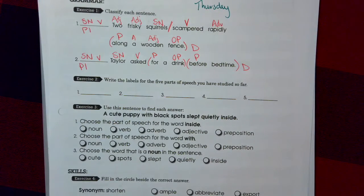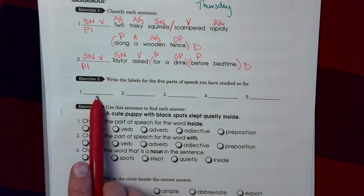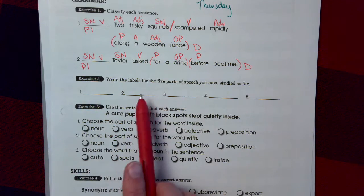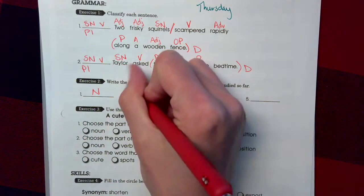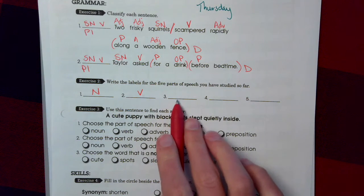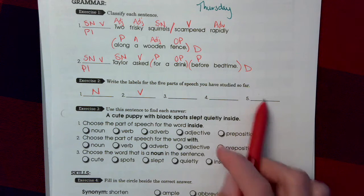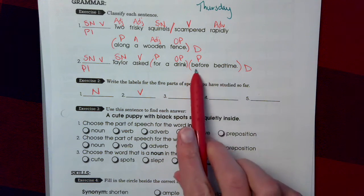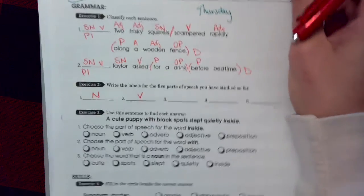Exercise 2. Write the labels for the 5 parts of speech you've studied so far. What would be here? Start with noun. Verb. What are our other 3? 5 is the new one that we've been focusing on this week. Press play when you're done.